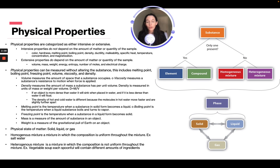Mass is a measure of the amount of substance in an object, and weight is a measure of the gravitational pull on the object. The physical states of matter are solid, liquid, and gas. Homogeneous mixtures have a uniform composition throughout — for example, salt water.